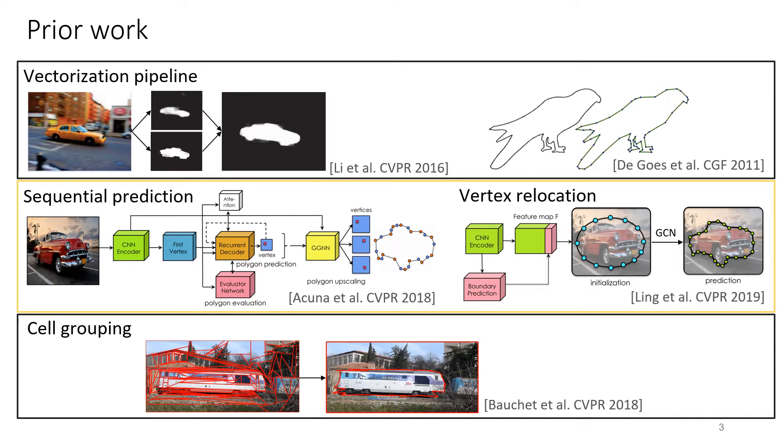Neural network architectures include polygon RNN which sequentially predicts vertices, and a curved GCN which relocates a fixed number of control points simultaneously. These methods do not prevent overlapping.